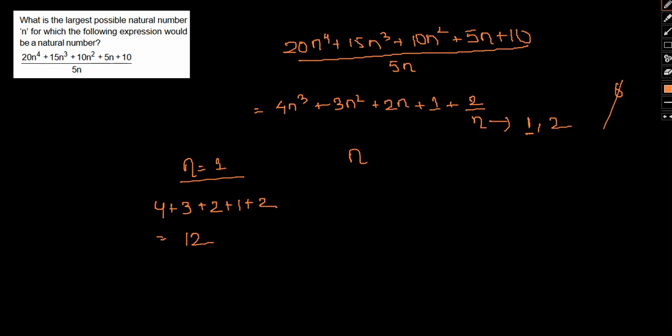And if n equal to 2, this would be 8 into 4, 32 plus 4 is 12 plus 4 plus 1. So 2 by 2 that is 1. So 44, 46, 47, 48. So for n equal to 2 this will be our largest value. And this will be our answer.